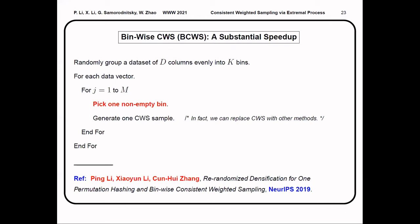On the other hand, repeating the CWS procedure for k times may also be very time-consuming in practice. We proposed the bin-wise CWS method to resolve this issue. We randomly group the dataset of d columns evenly into k bins. Then we conduct CWS within each bin. In this way, we only need to process each data vector once, so the CWS procedure can be significantly accelerated.